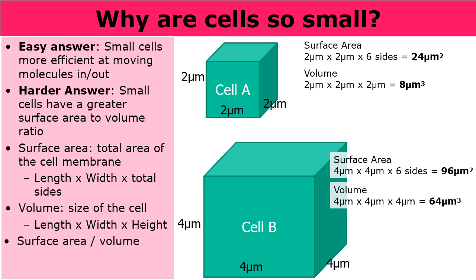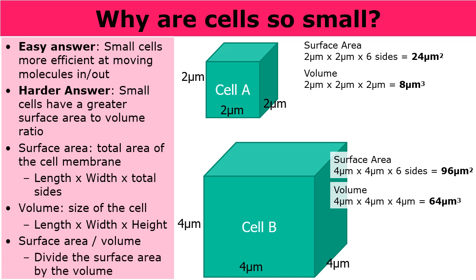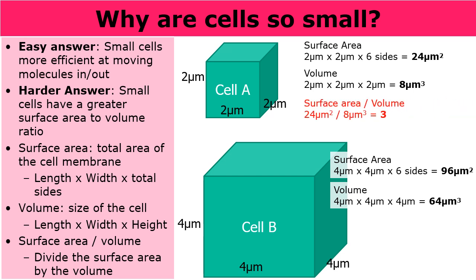To calculate the surface area to volume ratio, we divide the surface area by the volume. For cell A, we divide 24 by 8 and get 3. For cell B, the bigger cell, we divide 96 by 64 and get 1.5. Notice the smaller cell has a greater number — 3 is bigger than 1.5. Cells with a greater surface area to volume ratio are much more efficient at moving molecules in and out. Cells that are small tend to have much larger surface area to volume ratios. Larger cells, like cell B, would struggle at moving molecules in and out, and they probably wouldn't survive.